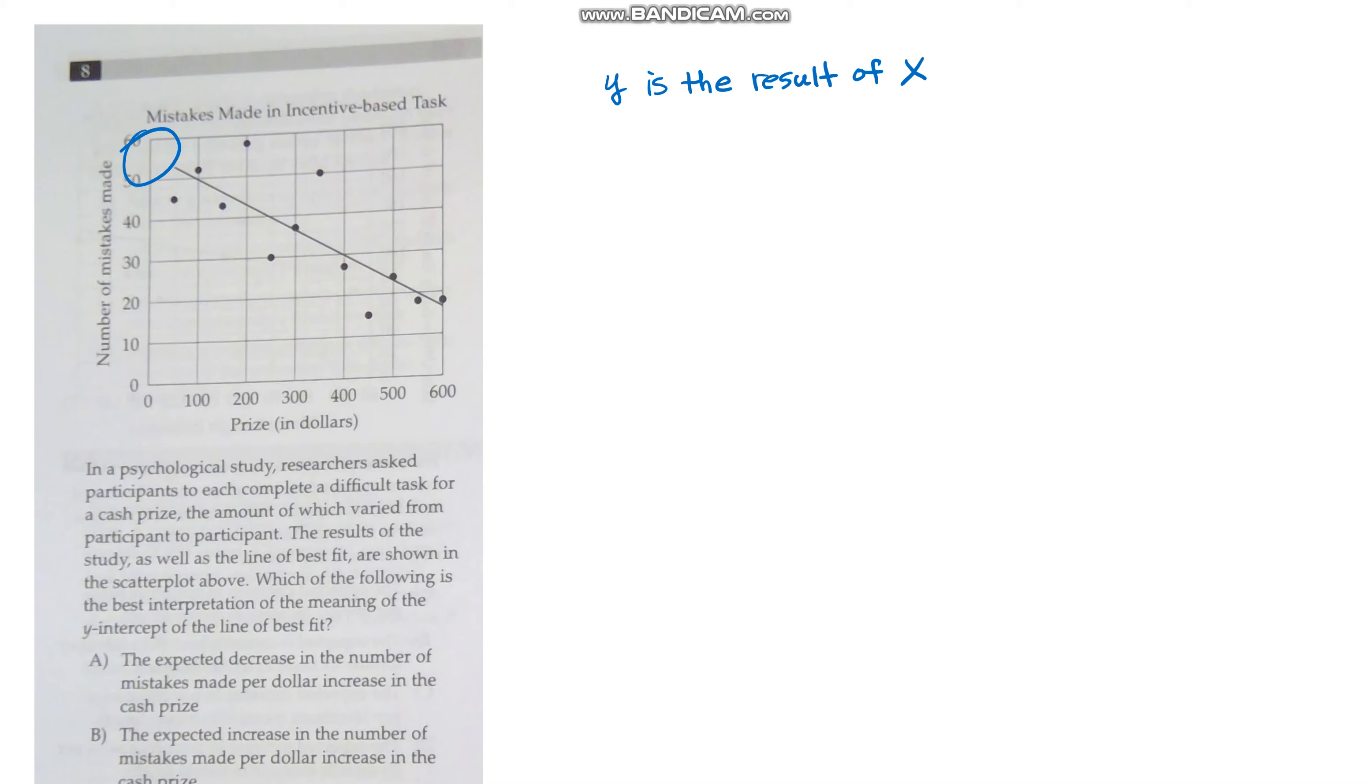And of course the right answer to that is if I award you no prize money or offer to pay you no money at all for work—I joke slavery—then you'd be expected to make that many mistakes. So that's the best way to interpret the y-intercept.